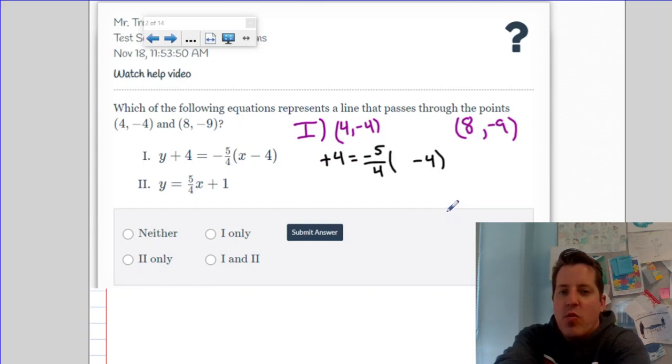For both of the points, we're going to start with the equation, but we haven't plugged anything in for x or y yet. For the first point, we're going to plug in x equals positive 4 and y equals negative 4, and that would look like this.